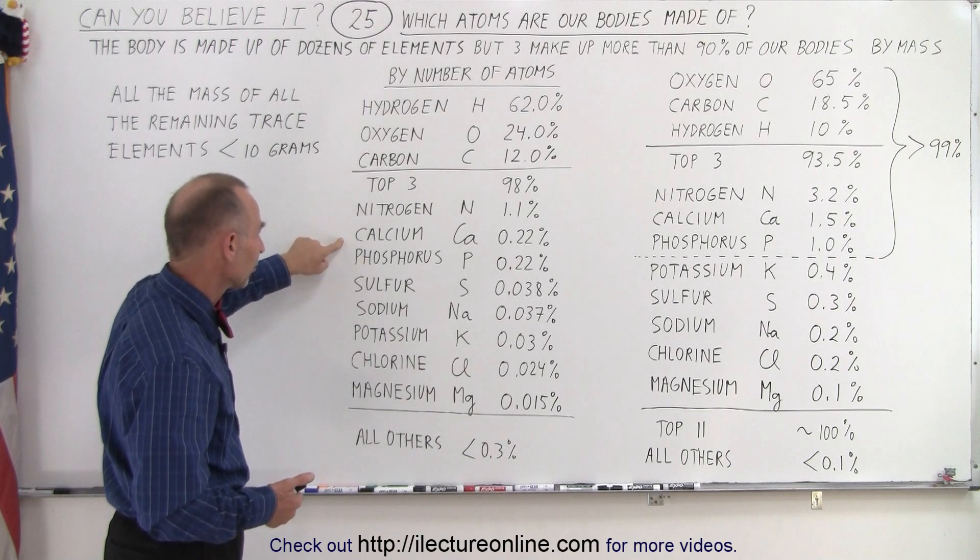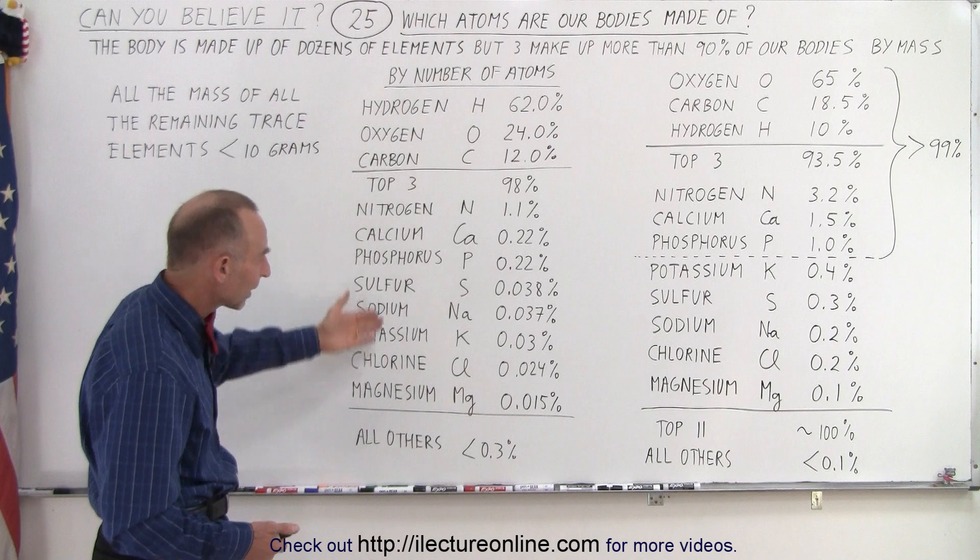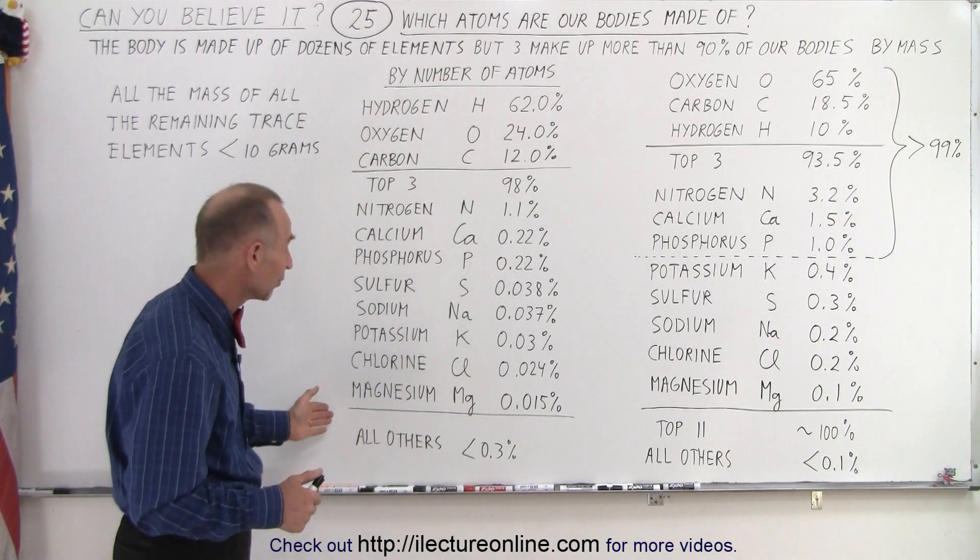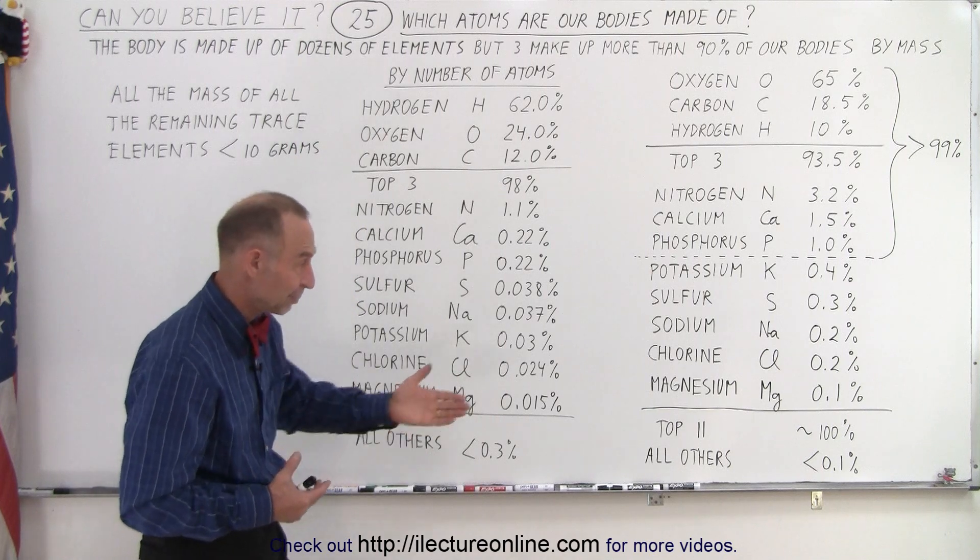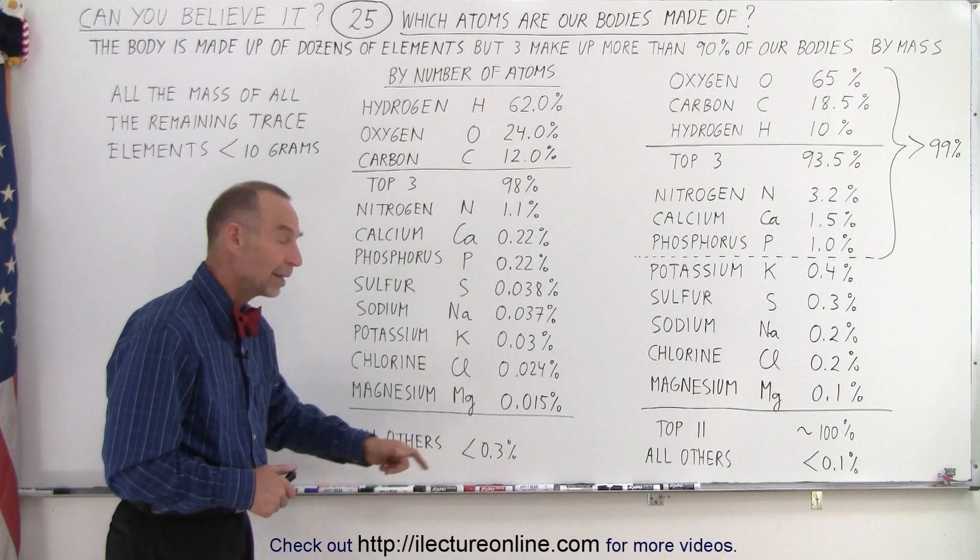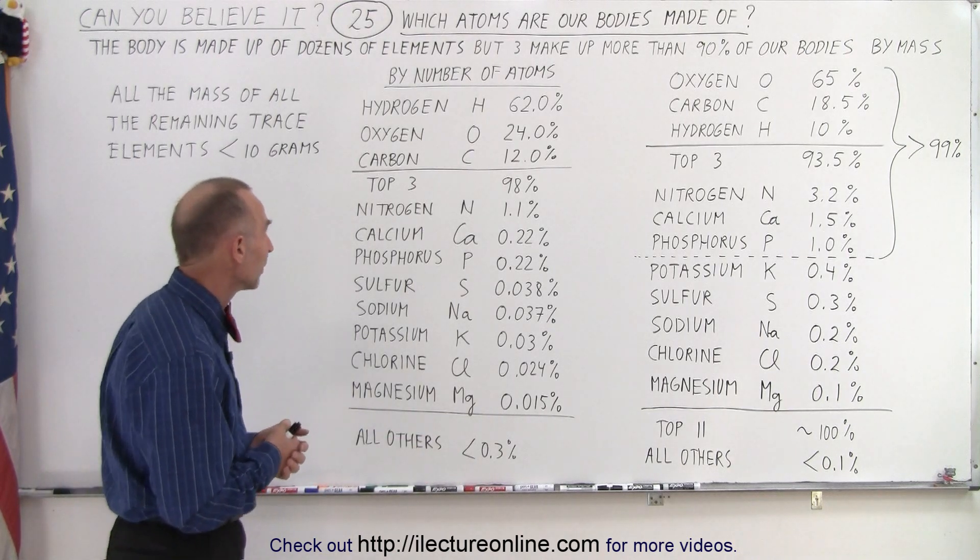Then we have nitrogen, calcium, phosphorus, sulfur, sodium, potassium, chlorine, magnesium. All together, 99.7% of our bodies are made up of those 11 atoms by number, not by mass. By mass, it's virtually 100%. And then you can see that all others make up less than 0.3% in number of the atoms in our body.